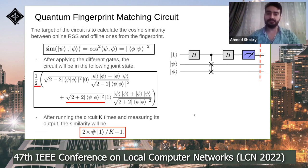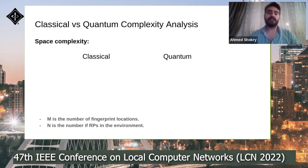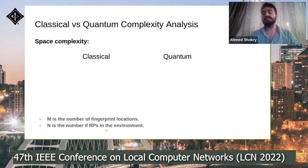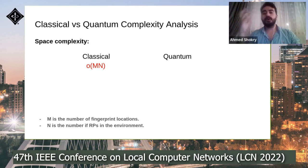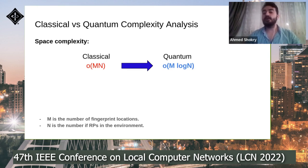Comparing classical versus quantum complexity: classical techniques store fingerprints at m locations, each as a vector of size n representing RSS from n access points, giving space complexity O(mn). The proposed quantum algorithm also stores fingerprints at m locations, but the n-dimensional RSS vector is encoded into log(n) quantum registers, giving space complexity O(m log n) — an exponential saving in the number of access points.